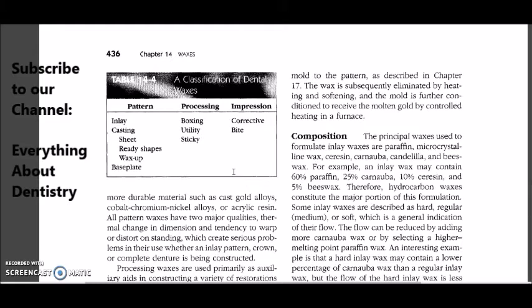In pattern waxes, you have three main types of waxes, and these are the three waxes which are used to form wax patterns. Whenever you want to write the use of these three waxes, you have to start with the sentence that the wax is used to make wax pattern of, and then you will be adding whatever the use is. Three types of pattern waxes: inlay wax, casting wax, and base plate wax, which is also known as modeling wax.